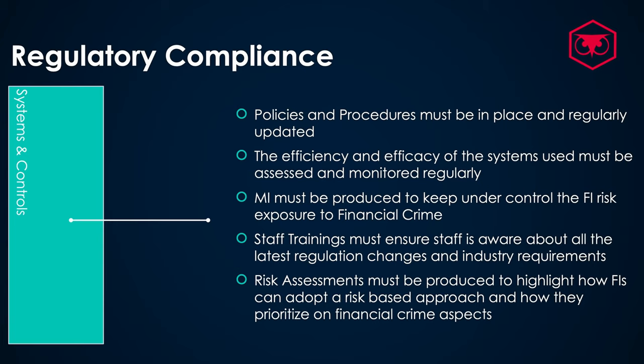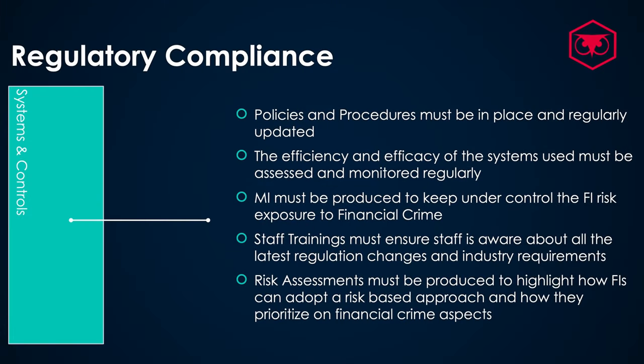It's important that the quality of the data extracted from those systems and reported to risk committees is accurate and able to demonstrate when there are risks to be identified for that financial institution. Another area to highlight is staff training — trainings are rolled out to bank staff across the different areas of financial crime to ensure they are updated with new regulations and any changes to the operating model. These are compulsory trainings that staff must complete on a regular basis. One more point within systems and controls is the risk assessment, which must be produced to highlight how financial institutions can adopt a risk-based approach and how they prioritize financial crime areas both at present and in the long term.